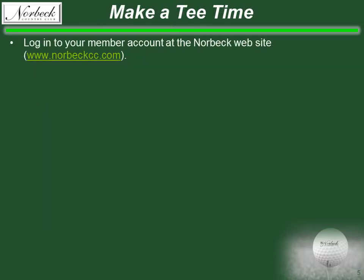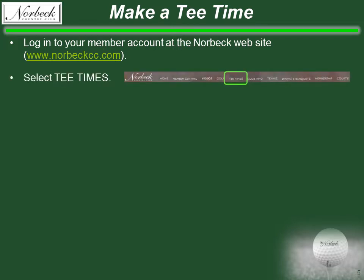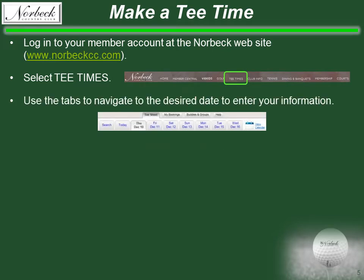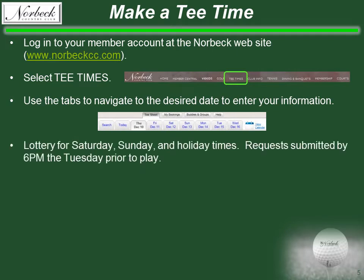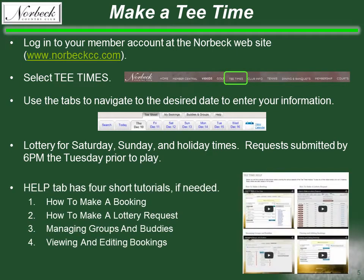To play, it is best to make a tee time. You can always call the Pro Shop, but you will always have the entire tee sheet for viewing at any time via the club's website. After logging in, simply select tee times from the main banner, then navigate to the desired date. Note that weekend and holiday tee times are assigned via lottery. Submit your request by 6pm on the Tuesday prior, and the tee sheet with assigned times will be available for viewing on Wednesday. Click on the Help tab to view four short tutorials.